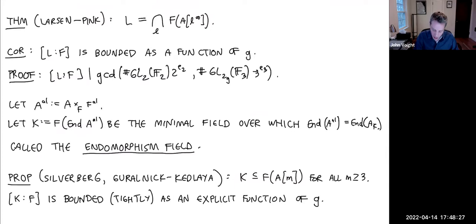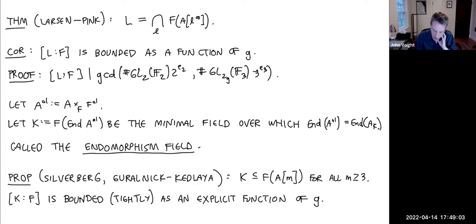We have a good understanding of endomorphism fields from work of several authors, notably Silverberg and Grothendieck–Katz–Lamacchia. The endomorphism field K is already contained inside the m-torsion field for any integer m ≥ 3. This shows that [K:F] is bounded as an explicit function of g. Grothenieck and Katz–Lamacchia bounded this quite tightly.